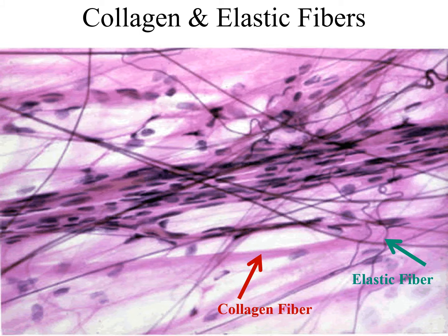Collagen fibers are like thick steel cables — they provide support and strength but are somewhat flexible. In the image you'll notice a rather thick fiber; that thick, flexible but strong fiber is a collagen fiber. The thinner squiggly fibers are elastic fibers, nowhere near the diameter of a collagen fiber.